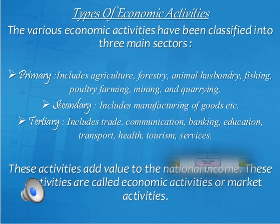Examples of economic activities include teaching, engineering, doctors, laborers, shopkeepers, and lawyers. Economic activities are further divided into three sectors: the primary sector, which includes agriculture, fishing, mining, forestry, and animal husbandry; the secondary sector, which covers manufacturing and factory production; and the tertiary sector, which includes trade, health, education, transport, tourism, banking, and IT companies — any sector that provides services.